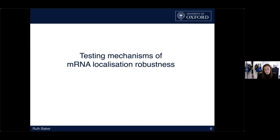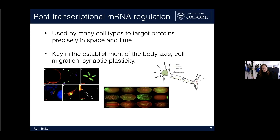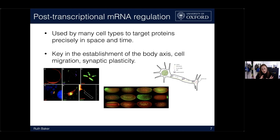The first case study I want to talk about is mechanisms of mRNA localization and why that process could be made robust. A cell needs to get proteins in the right place at the right time to perform a particular job — for example, establishing the body axis, cell polarization, and aspects of synaptic plasticity. It's quite tricky to make a protein in one place and then get it to the right location, especially in very large cells.